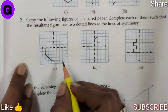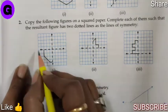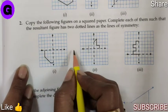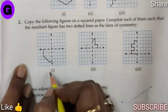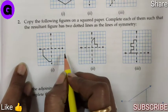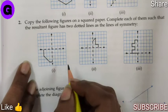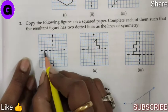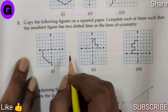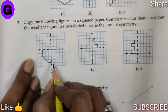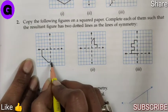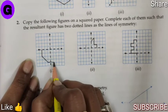Question number 2. The lines of symmetry have been given. Here 2 lines of symmetry are given, and hence we have to complete the diagram. Only one-fourth of the diagram is given, so let us continue.